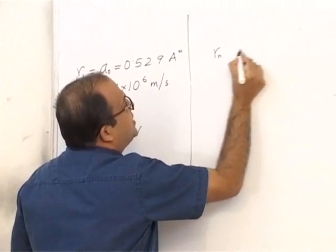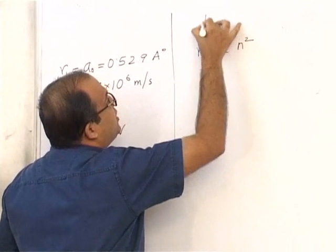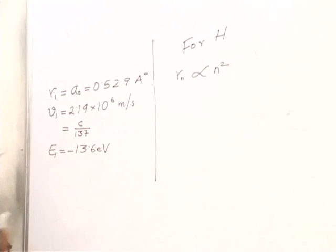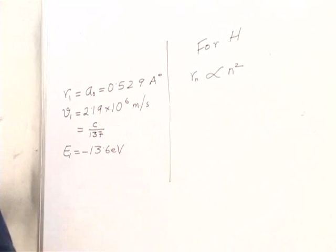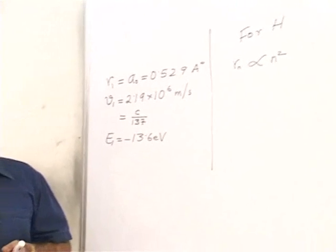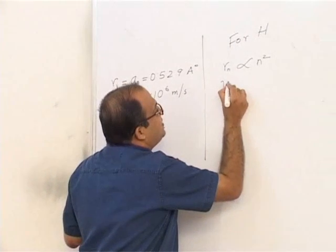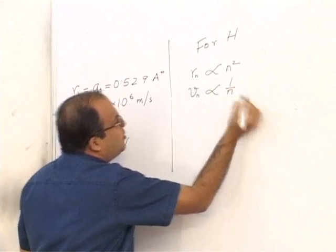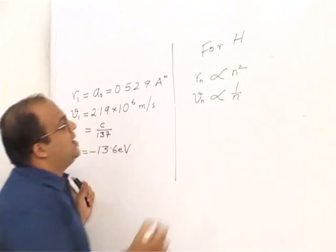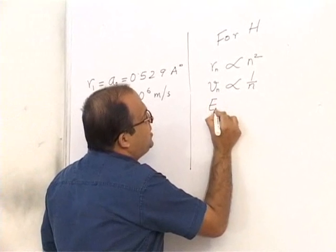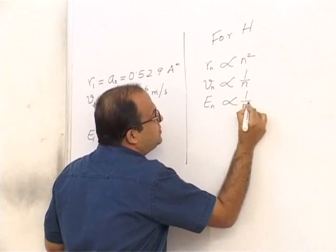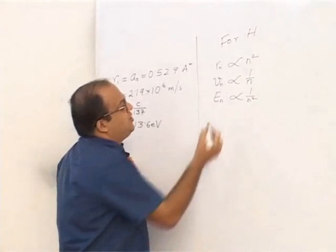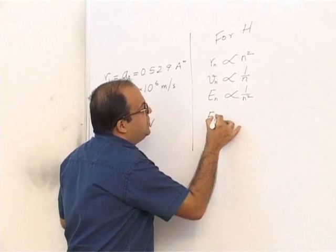For hydrogen, the radius of the nth orbit Rn is proportional to n². As n increases, the radius increases. The velocity in the nth orbit Vn is proportional to 1/n — as n increases, velocity decreases. The energy in the nth orbit is proportional to 1/n².